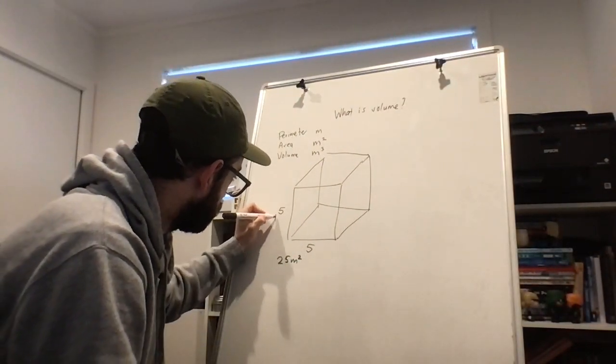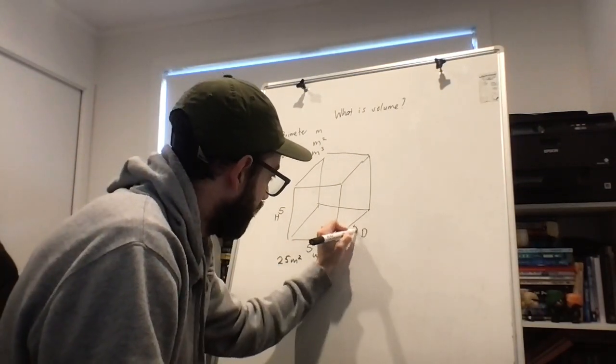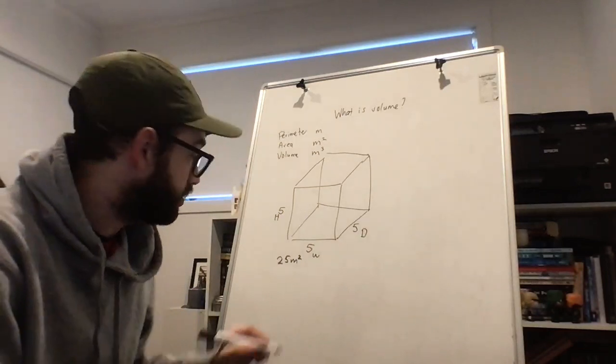we have our height, we have our width, and we have our depth. And that is also five because it's a cube.